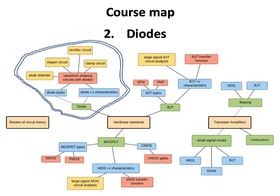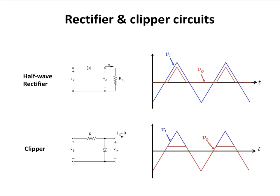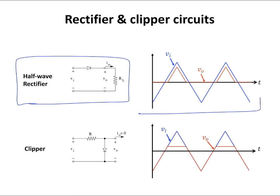Hello everyone. We are at the topic of diodes and we are studying the waveform shaping circuits using diodes. In today's lecture we're going to look at a clipper circuit. In the previous video we looked at a half wave rectifier circuit using a diode, and we found the transfer function of this two-port network and found the output for a sample triangular waveform input, calculating the output waveform shown here.